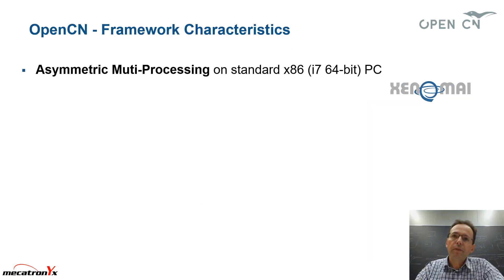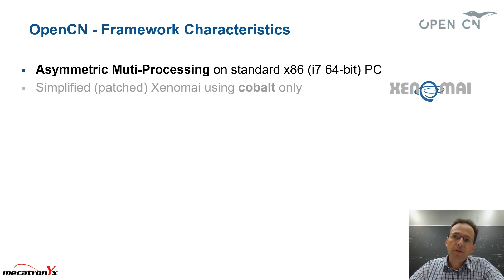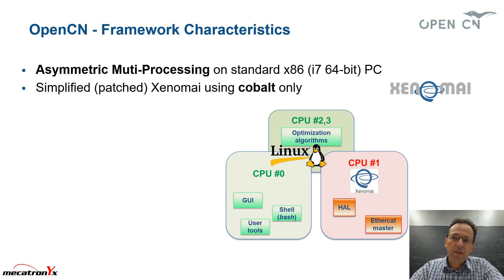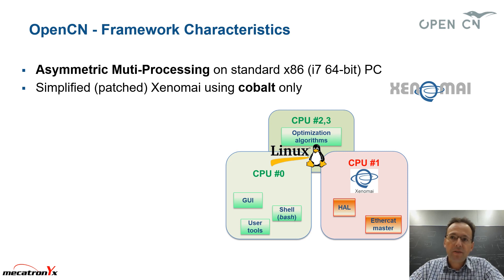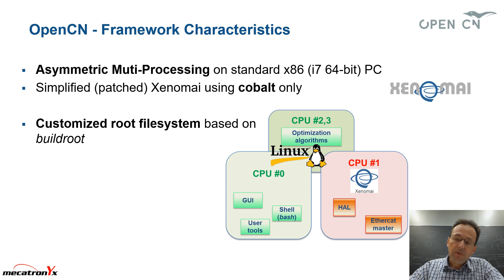One of the major characteristics of the OpenCN framework is that we use the AMP — Asymmetric Multiprocessing — approach, meaning that each CPU has dedicated activities. Specifically, CPU 1 is able to run hard real-time tasks only, while CPUs 0, 2, and 3 handle non real-time activities only. That's why we needed to patch the Xenomai extensions, more specifically the Cobalt kernel. We also use Buildroot to build our own customized root file system, which is very lightweight compared to a heavy distribution.